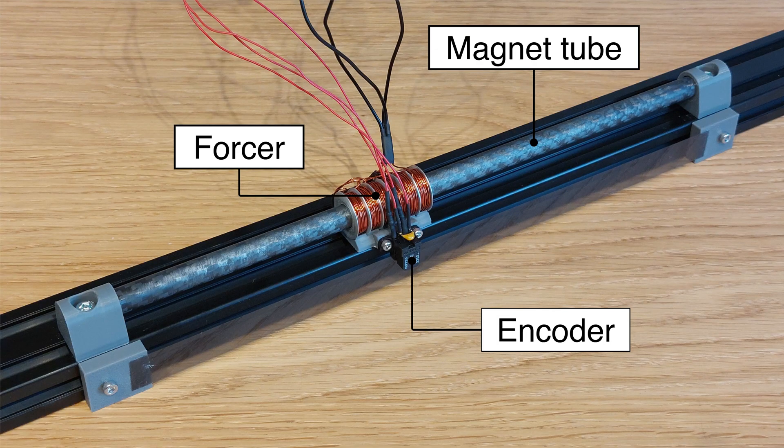The magnet tube is mounted to a piece of 2040 extrusion. The forcer slides over the tube after some sanding.